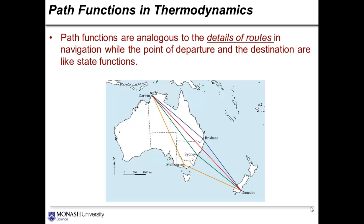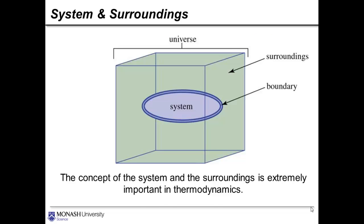Path functions perhaps are analogous to the details of the routes in the navigation between Dunedin and Darwin that we talked about before. While the point of departure and the destination are more like state functions. Perhaps that analogy works well for you.